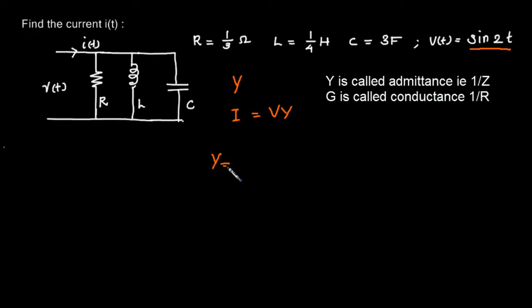We will do it here: Y of resistance plus Y of inductance plus conductance of capacitor. That means 1/R plus conductance will be 1/(jωL) plus jωC. This is the total conductance.